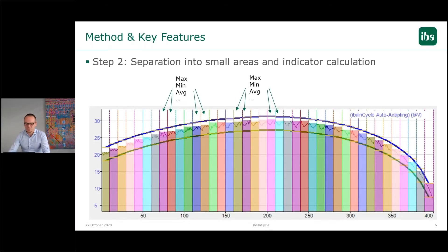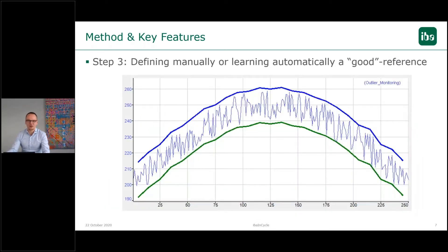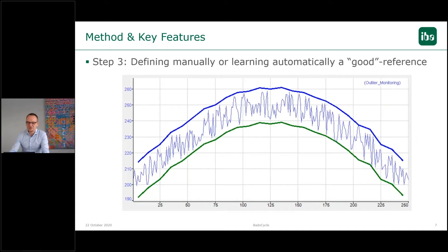Range is also possible, so the peak to peak value, the change during the cycle and a lot more indicators. Based on this data we can now define either manually or with automatic learning, we can define a good reference.